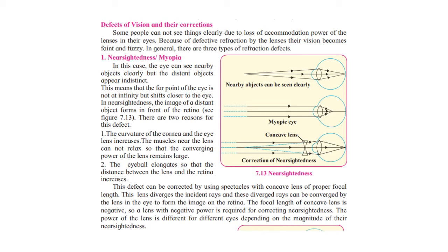Some of you may have seen relatives wearing spectacles with a concave lens. We say the power of such a lens is negative because the focal length is negative. These specs need to be worn continuously since you are looking at a distance.